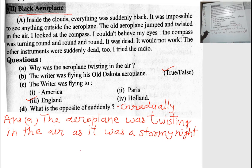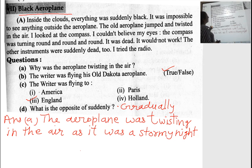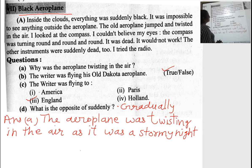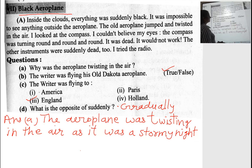Now let's see the second story, 'The Black Aeroplane', question-answer and important extract A. Inside the clouds, everything was suddenly black. It was impossible to see anything outside the aeroplane. The old aeroplane jumped and twisted in the air. I looked at the compass — I couldn't believe my eyes. The compass was turning round and round and round. It was dead. It would not work. The other instruments were suddenly dead too.